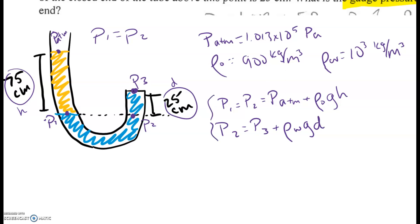So combining these two formulas, we see that the pressure at point 3 is going to be atmospheric pressure plus density of oil, G, H, minus density of water, G, D. So simplifying here, that's atmospheric pressure. Let me factor out the acceleration due to gravity. Density of oil times H, minus density of water times D.